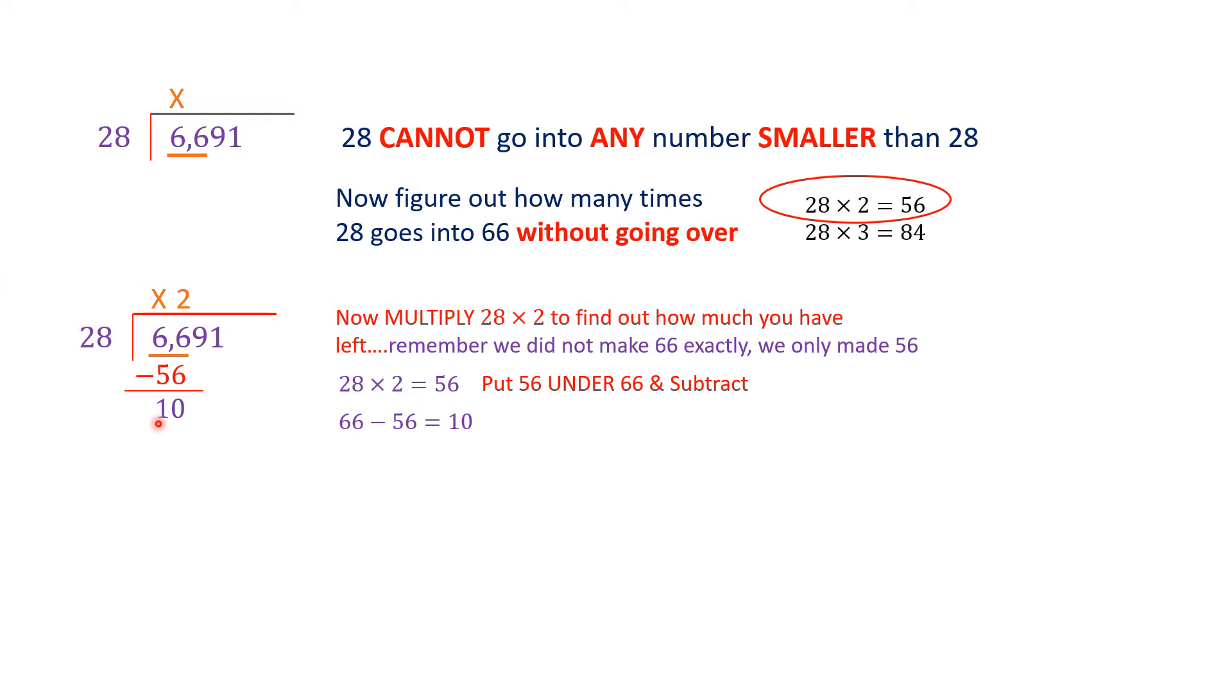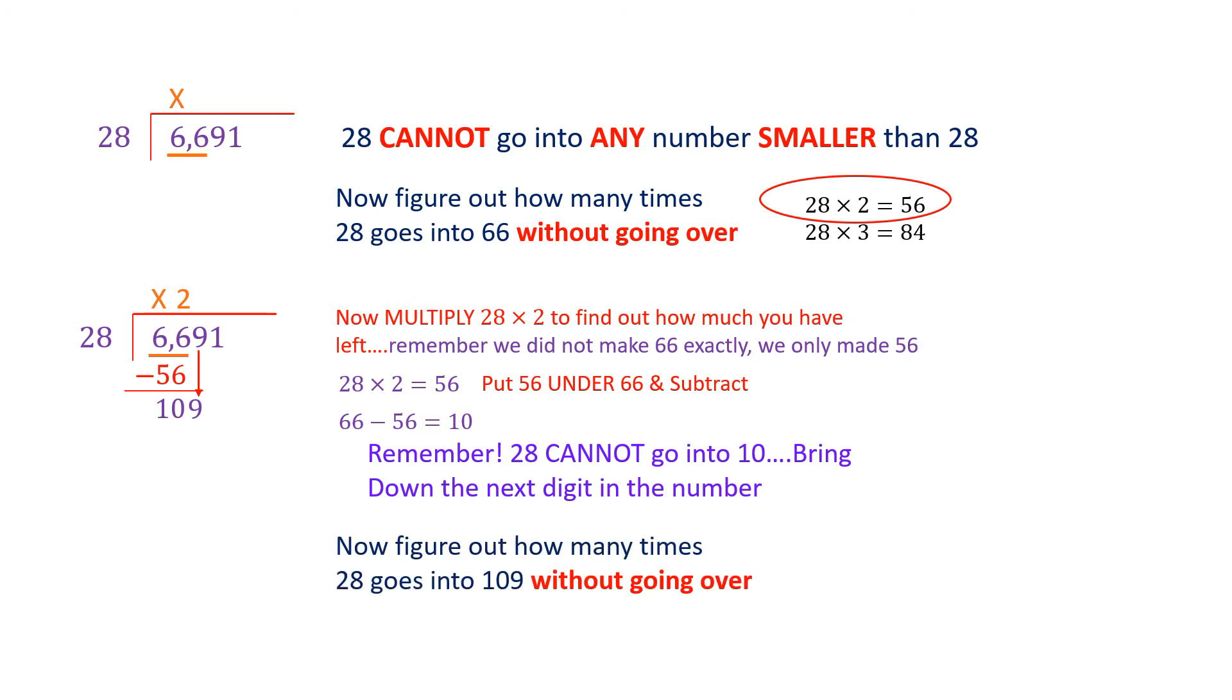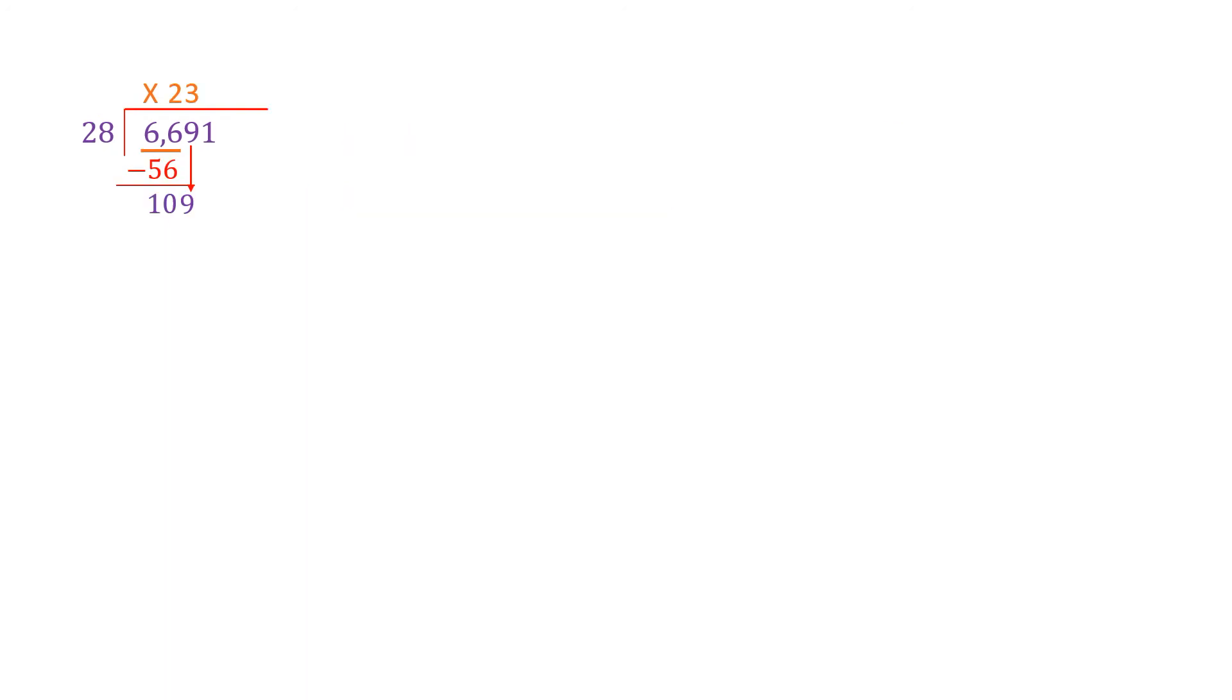Now 28 can go into 10 how many times? Wait a minute. Trick question. 28 can't go into any number lower than 28, so it can't go into 10. So what do we do now? We bring down the next digit in our number. So we already took care of 66. The next digit is 9. We are going to bring down that 9, and we are going to say now how many times does 28 go into 109 without going over. So let's do some more multiplication.